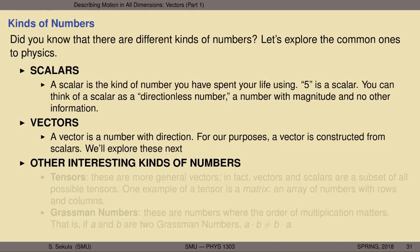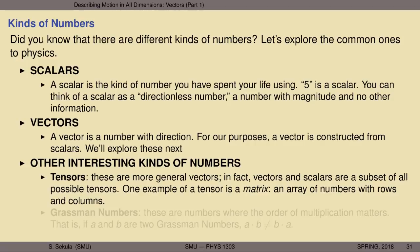There are other interesting kinds of numbers — this is not an exhaustive list. One interesting kind of mathematical object is called a tensor. Scalars and vectors are a kind of tensor; tensors are a more general form, and vectors and scalars are a subset of all possible tensors. One example of a tensor you might have seen before is a matrix — an array of numbers with rows and columns, such as a two-by-two or three-by-two array. Tensors are by no means limited to dimensions you can write on paper; they can have unlimited rank, which indicates the kind of structure being described.